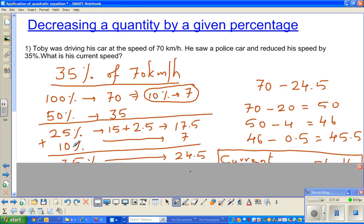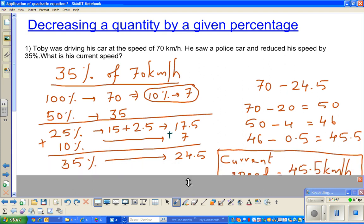We have already got 10% previously, which is 7. So 25% is 17.5 and 10% is 7. We need to add these two. We get 35% is this plus this, which is 24.5.